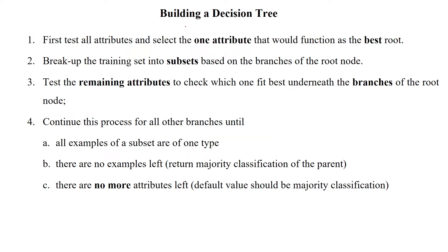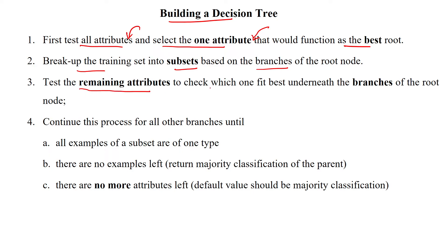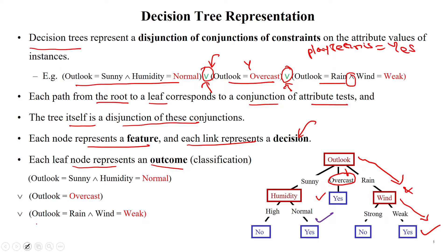To build a decision tree, first check all the attributes and select the one that contributes the most to the problem statement — the most informative attribute. That attribute is selected as the best attribute. Then break up the training set into subsets based on the rules given in the branches. The remaining attributes are tested to check which is best under the given criteria, continuing this process from the root node for all branches.